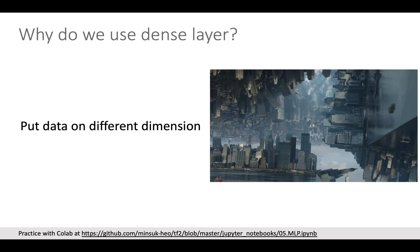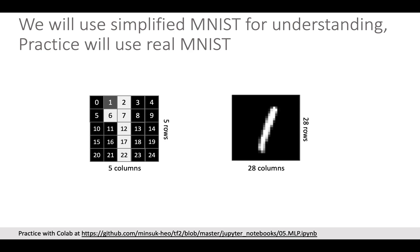Let's clearly understand this concept with a simple example. While we will use MNIST for practice which is 28 rows by 28 column image data, let's use a simpler 5 rows by 5 columns image for better understanding.